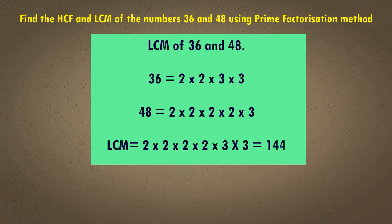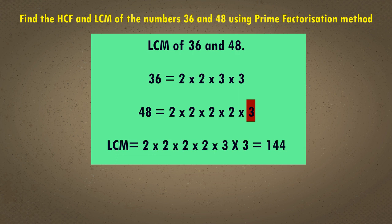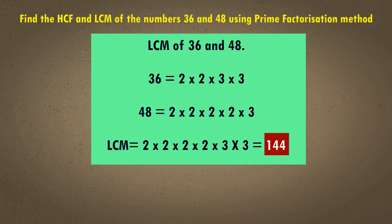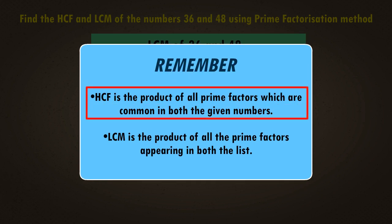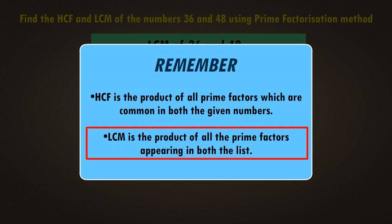Now let us find the LCM of 36 and 48. This is done by multiplying all the prime factors which appear in either list. The factors of 36 are 2 × 2 × 3 × 3, and the factors of 48 are 2 × 2 × 2 × 2 × 3. So the LCM is equal to 2 × 2 × 2 × 2 × 3 × 3 = 144. Remember: HCF is the product of all prime factors common to both given numbers. LCM is the product of all prime factors appearing in both lists.